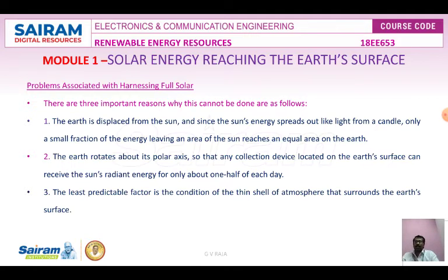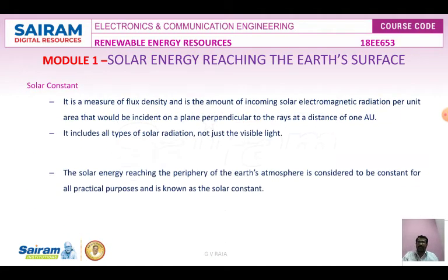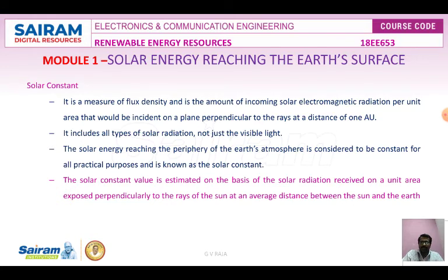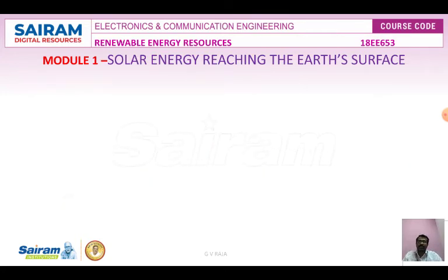The solar constant is a measure of flux density — the amount of incoming solar electromagnetic radiation per unit area. It includes all types of solar radiation, not just visible light. Solar energy reaching the periphery of the Earth's atmosphere is considered constant for all practical purposes and is known as the solar constant, estimated based on solar radiation received per unit area perpendicular to the Sun's rays.